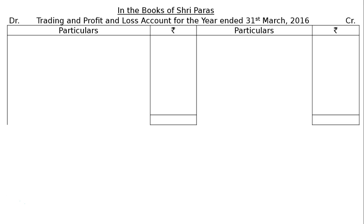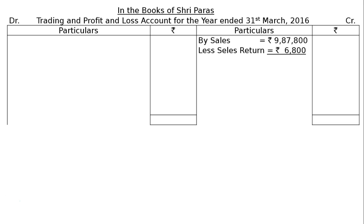After drawing the format, we have to start from the credit side, that is by sales Rs. 9,87,800. We have to deduct returns out of that — sales return Rs. 6,800. In the final column, we can have Rs. 9,81,000. Then the next one is by closing stock Rs. 68,000.